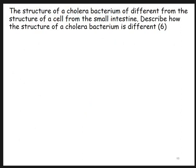For the last question: the structure of a cholera bacterium is different from the structure of a cell from the small intestine. Describe how the structure of a cholera bacterium is different. They're asking you to compare a prokaryote with a eukaryote - a bacterial cell with an animal cell, because the small intestine is inside you and you are an animal. It's worth six marks, so the examiner expects six interesting things. You can write bullet points but they must be full sentences. Pause the video and have a go.